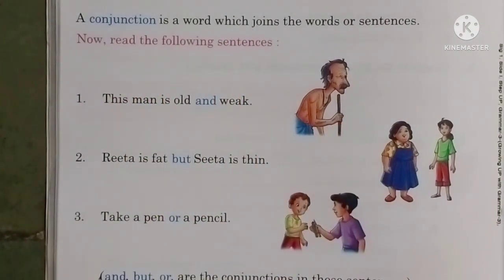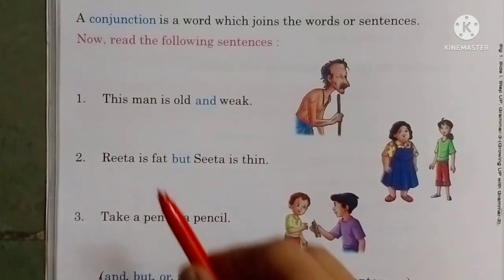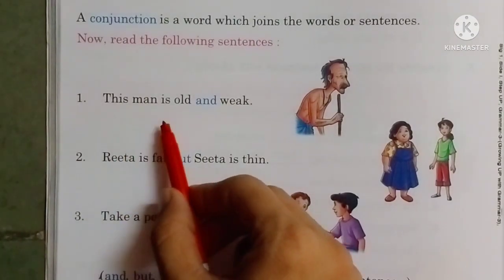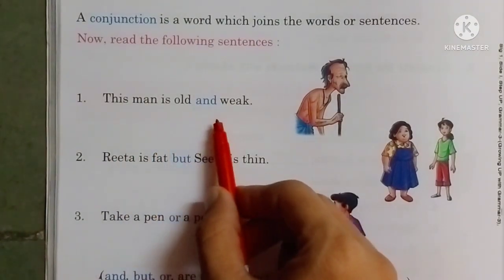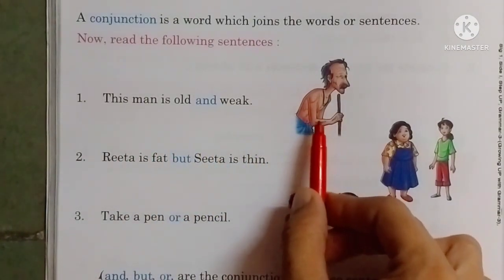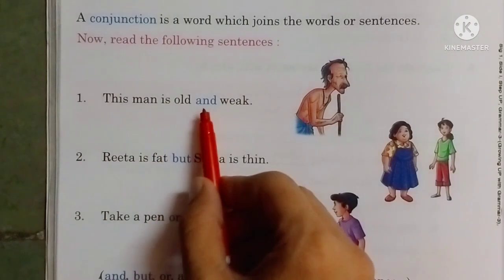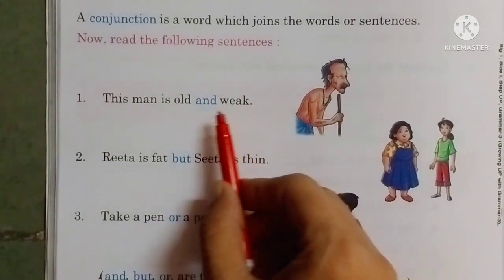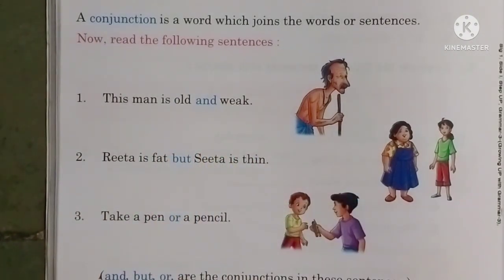Now read the following sentences. This man is old and weak. In this sentence, 'and' is a Conjunction.